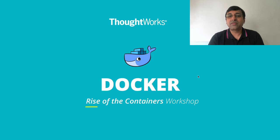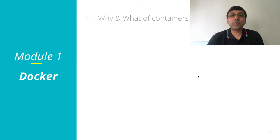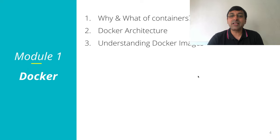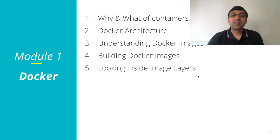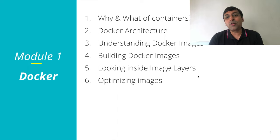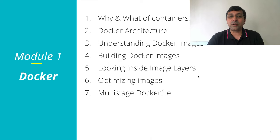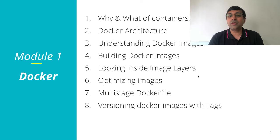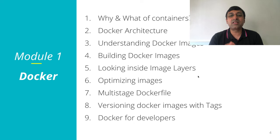In the online workshop, we have two modules. The first module is Docker. We start with the why and what of containers. We look at Docker architecture and understand Docker images. We learn how to build Docker images, go deep inside image layers, learn how to optimize images, create multi-stage Dockerfiles, and learn how to version Docker images using tags. And at the end, Docker is not just for production — it can be used just for development also.